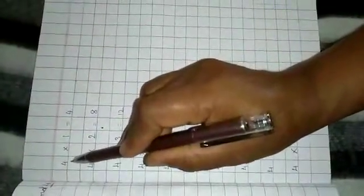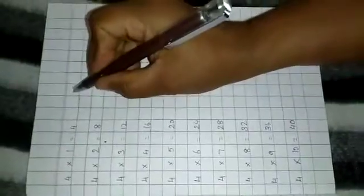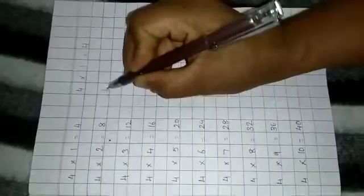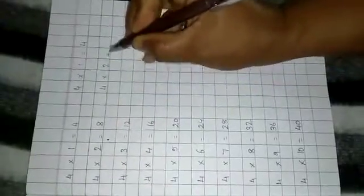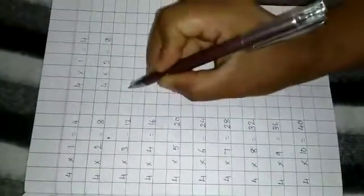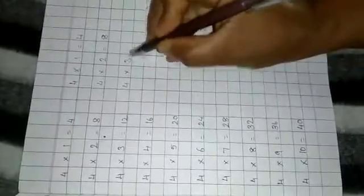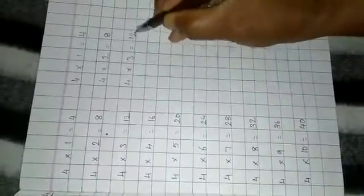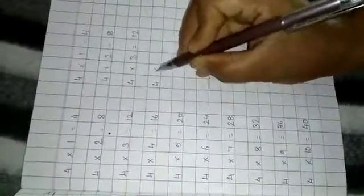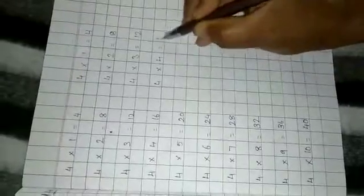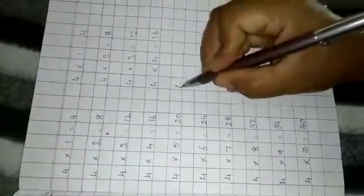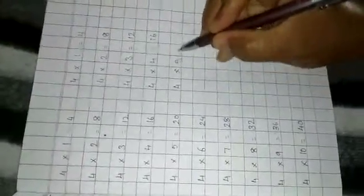Next one, table of 4. 4 1s are 4. 4 2s are 8. 4 3s are 12. 4 4s are 16. 4 5s are 20.